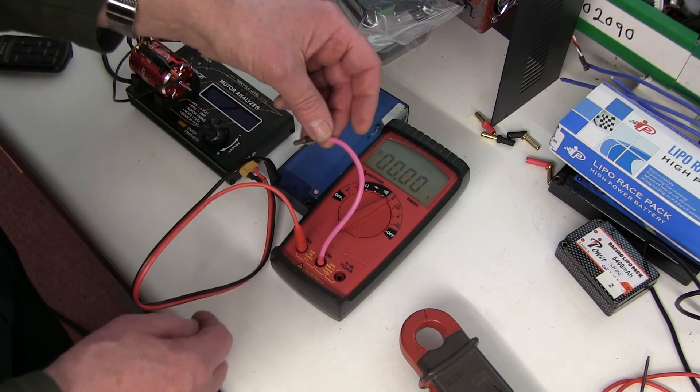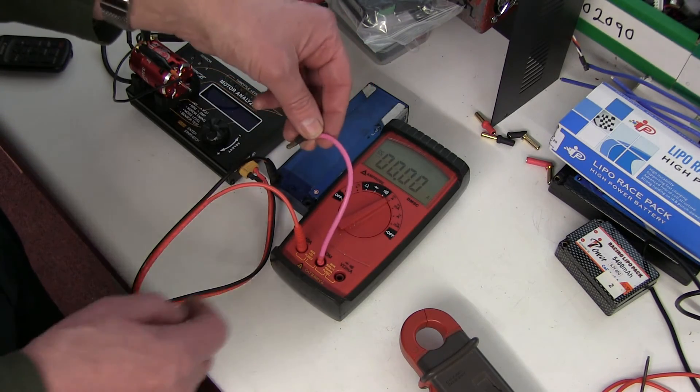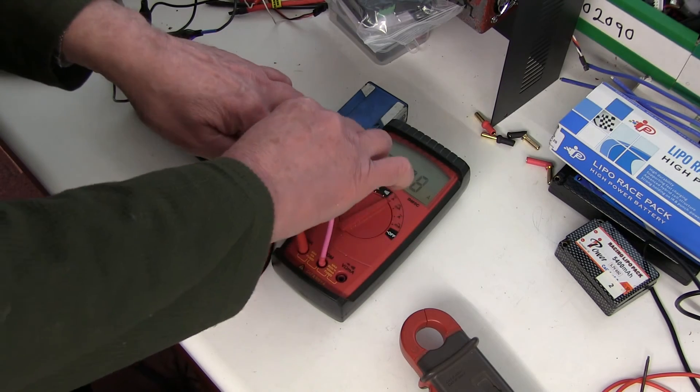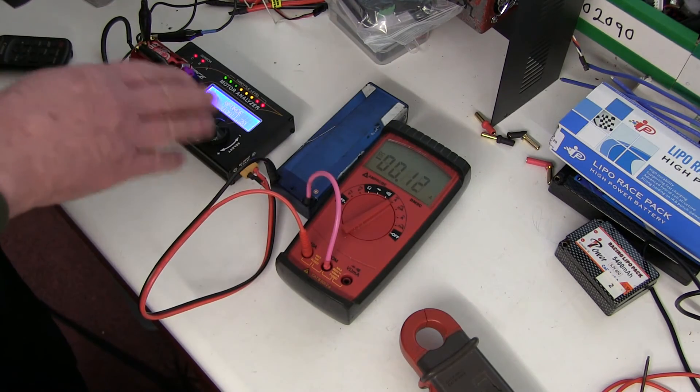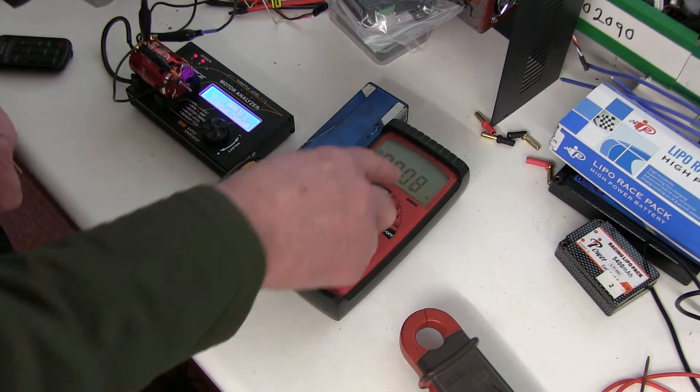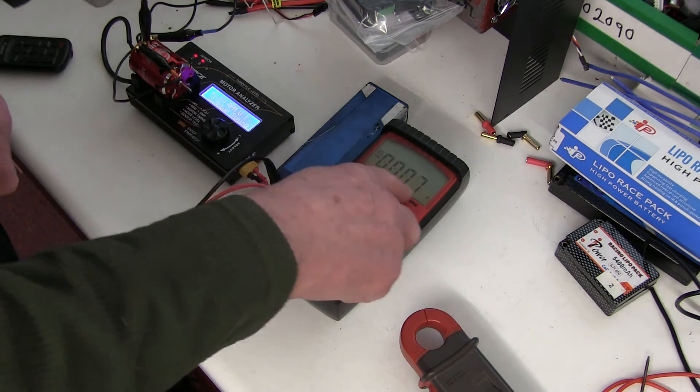You just need a jumper lead, and luckily these are 4mm sockets, so if you're using 4mm plugs they just plug in. Just make one up if you haven't got one or use the one that came in the meter. Plug it into the positive and your car will come on like normal. Now it shows a tiny bit of current being drawn just to run the electronics.